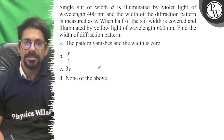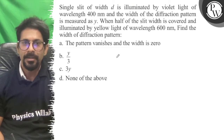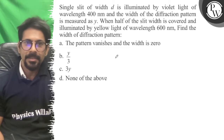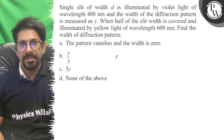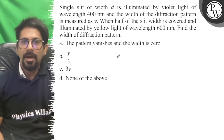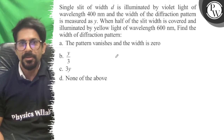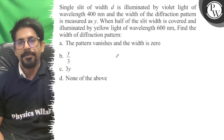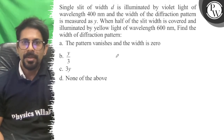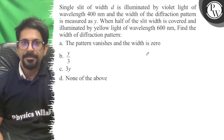Single slit of width D is illuminated by violet light of wavelength 400 nm. The width of the diffraction pattern is measured as y. When half the slit is covered and illuminated by yellow light of wavelength 600 nm, find the width of the diffraction pattern.